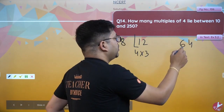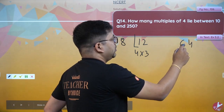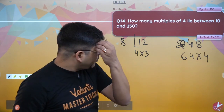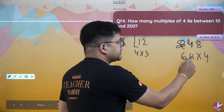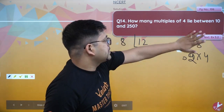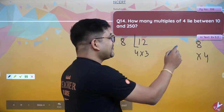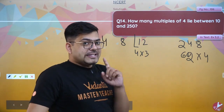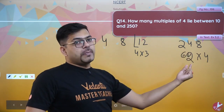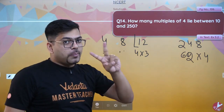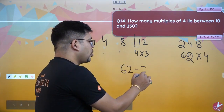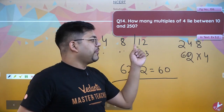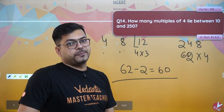250 se pehle kaun sa multiple hota hai 4 ka? To agar main galat nahi hoon, 248 hota hai. Yeh 62nd multiple of 4 hai. So total 62 multiples hain 4 ke. Is 62 multiples mein se, aapne pehla aur doosra multiple nahi liya — to 2 multiples aapne nahi liye. So 62 minus 2 = 60. Matlab total 60 multiples hain 4 ke, 10 se leke 250 ke beech mein — yaani 12 se lekar 248 tak.